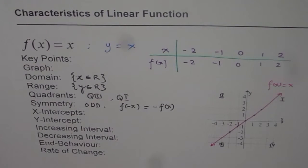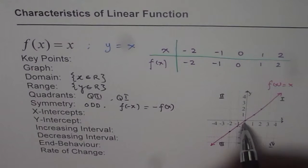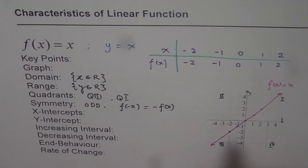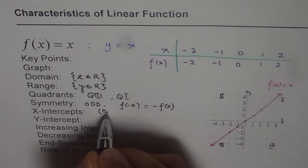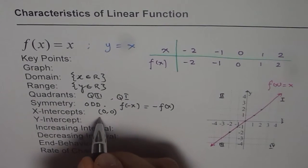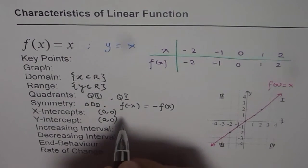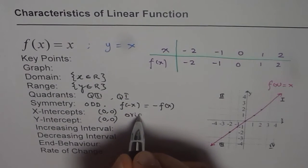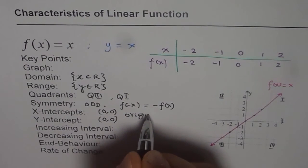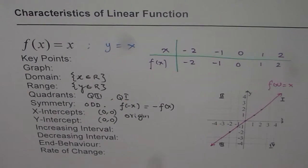X-intercept and y-intercept: for this straight line, both intercepts are at the origin, which is (0, 0). So x equals 0 is the x-intercept, y equals 0 is the y-intercept, and we say it is the origin — which is both the x and y intercept. So the parent function y equals to x, or f of x equals to x, goes through the origin.